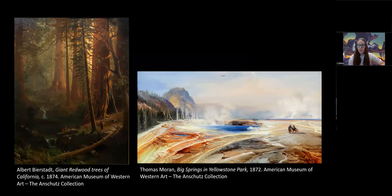Artists such as Thomas Hill, Thomas Moran, Albert Bierstadt, Asher B. Durand, John F. Kensett, and Worthington Whittredge, among others, were part of this school of artists, with the father or founder being Thomas Cole.